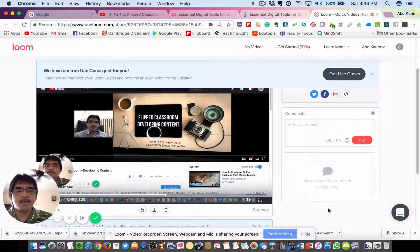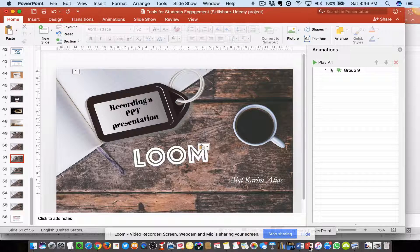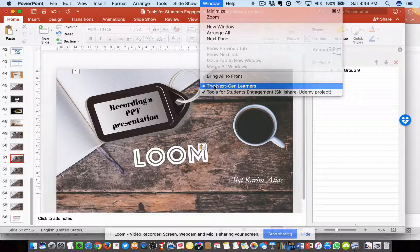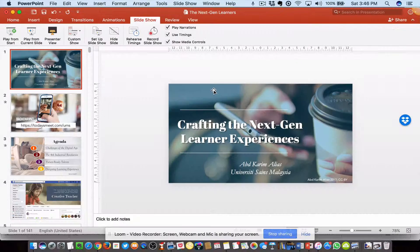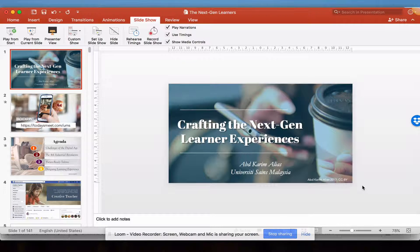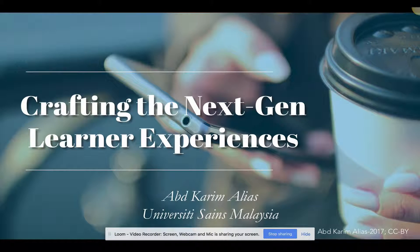Then click start recording, choose your entire screen, and click share. There's a countdown — three, two, one. Switch to your PowerPoint and go to the presentation you want to do a screen recording and narration for. I'm using this one as an example. Play full screen.